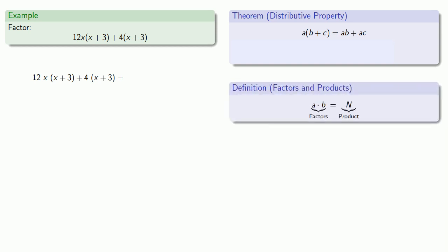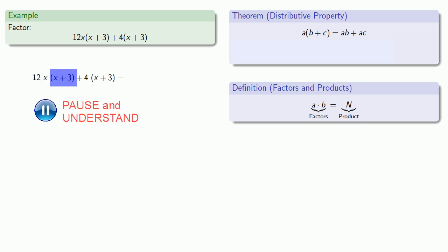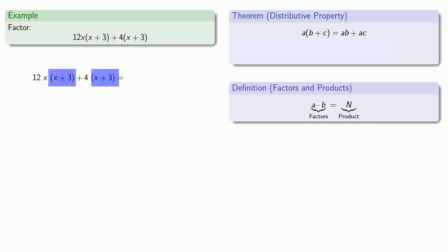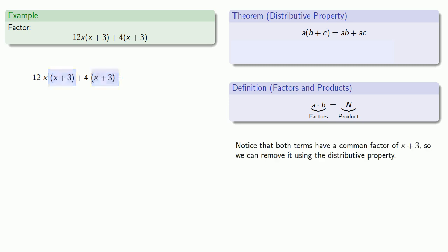A factor is something that is multiplied by something else. In this first term, we have three things that are being multiplied: 12, x, and x plus 3. And in this second term, we have two things that are being multiplied: 4 and x plus 3. Both of these terms have x plus 3 as one of the things being multiplied, so both terms have a common factor of x plus 3, and we can remove it using the distributive property.